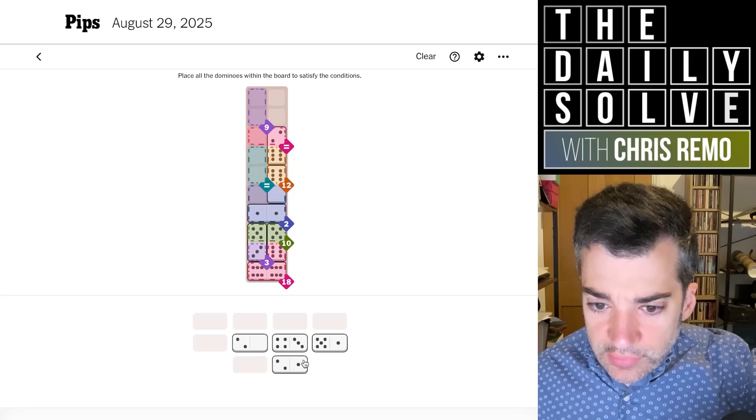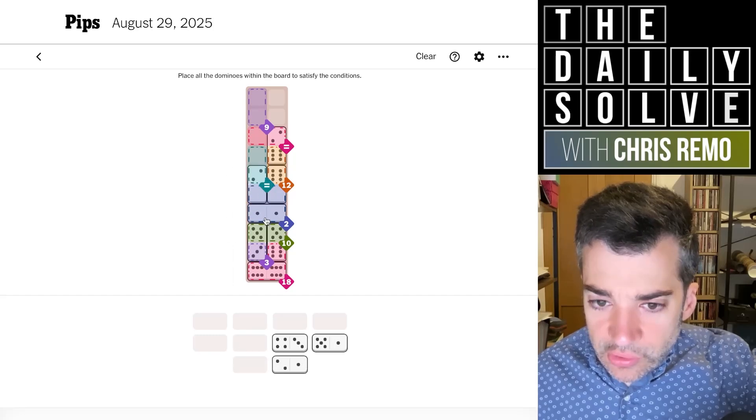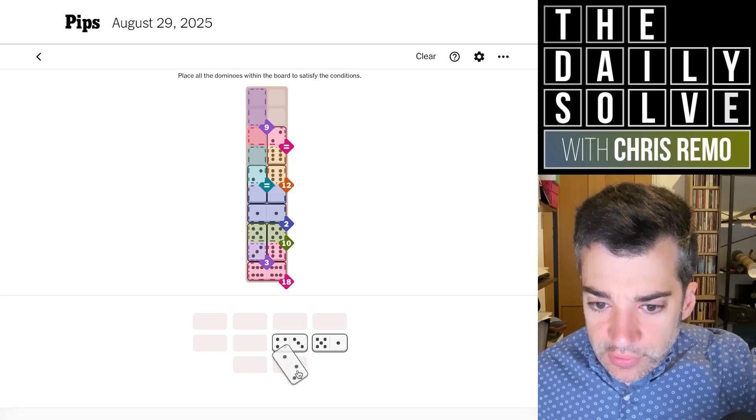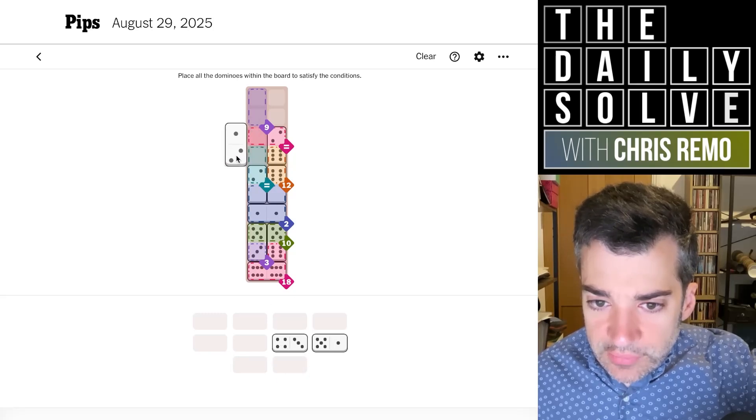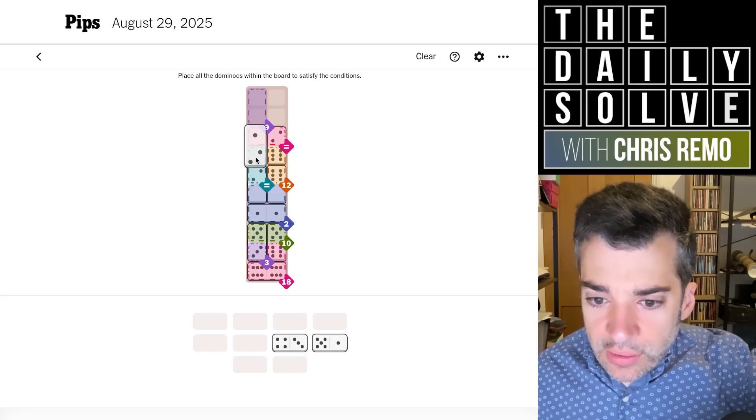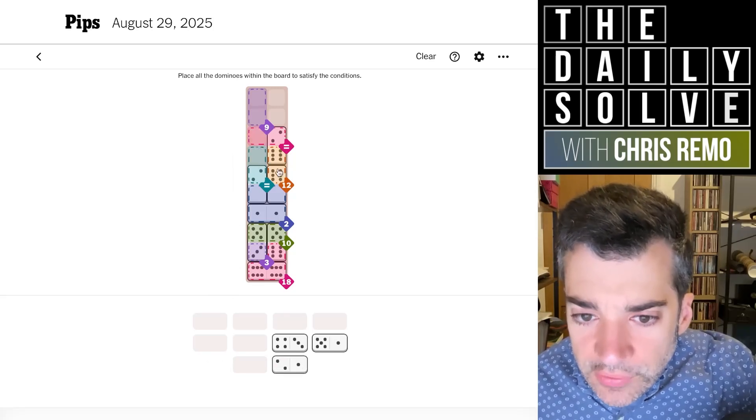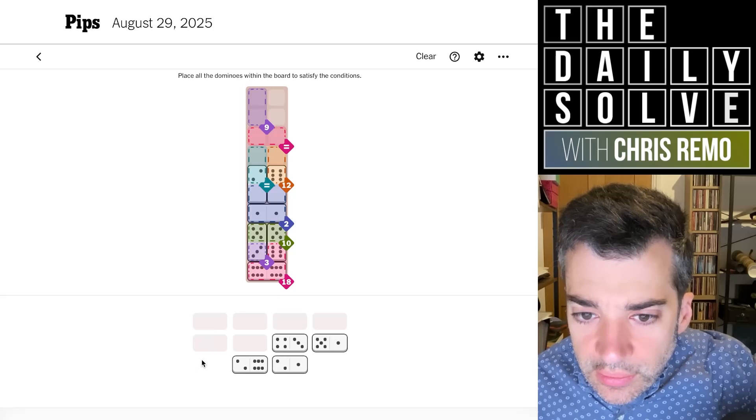So we've got another blank to stick out of this large two region. Then the equivalence region will need this other two sticking up out of it. Oh no, that's wrong. Yeah, I've done something wrong because the equals doesn't work there.